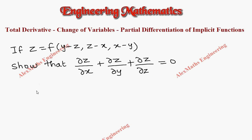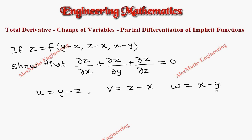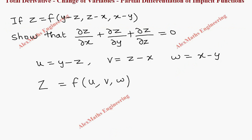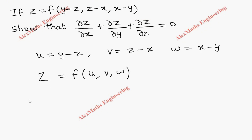Let's take u equal to y minus z, v equal to z minus x, and w equal to x minus y. So basically our capital Z is a function of u, v, and w. Now we have to find ∂Z/∂x.